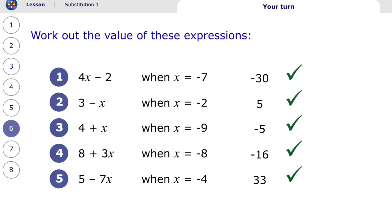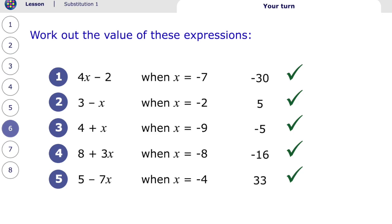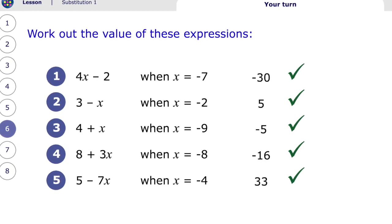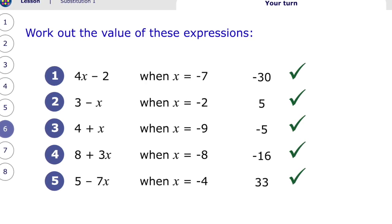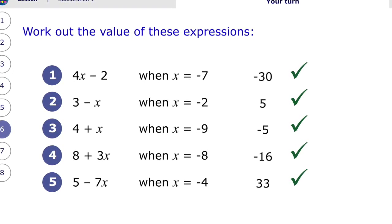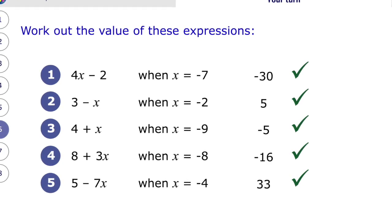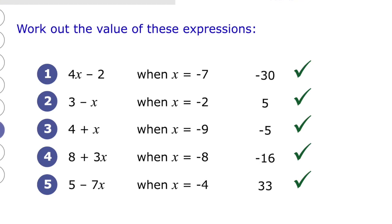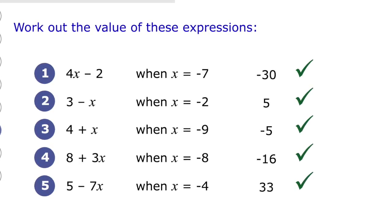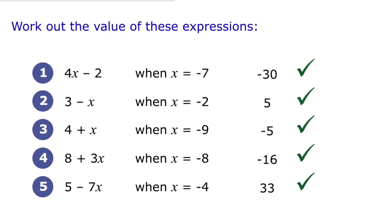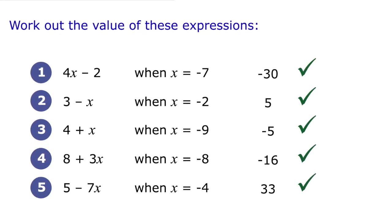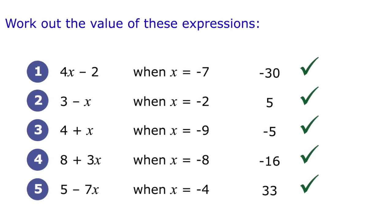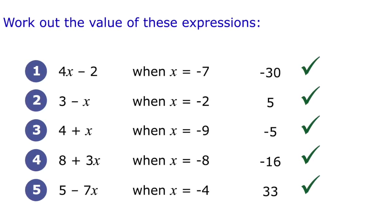Here are the answers. If you made a mistake it's probably because you got confused with negative numbers. On the last one — question five — seven multiplied by negative four is negative 28, and then you do five subtract negative 28. Two negatives make a positive, so it becomes five plus 28, which makes 33. Be careful on that one and go back for another go if needed.